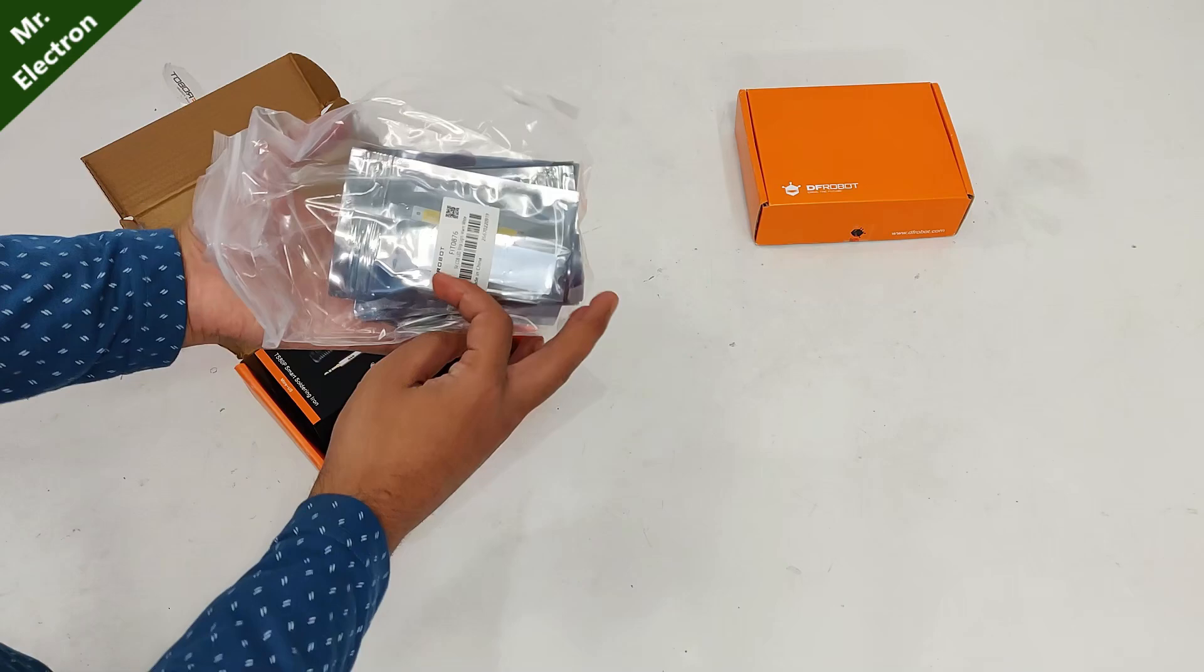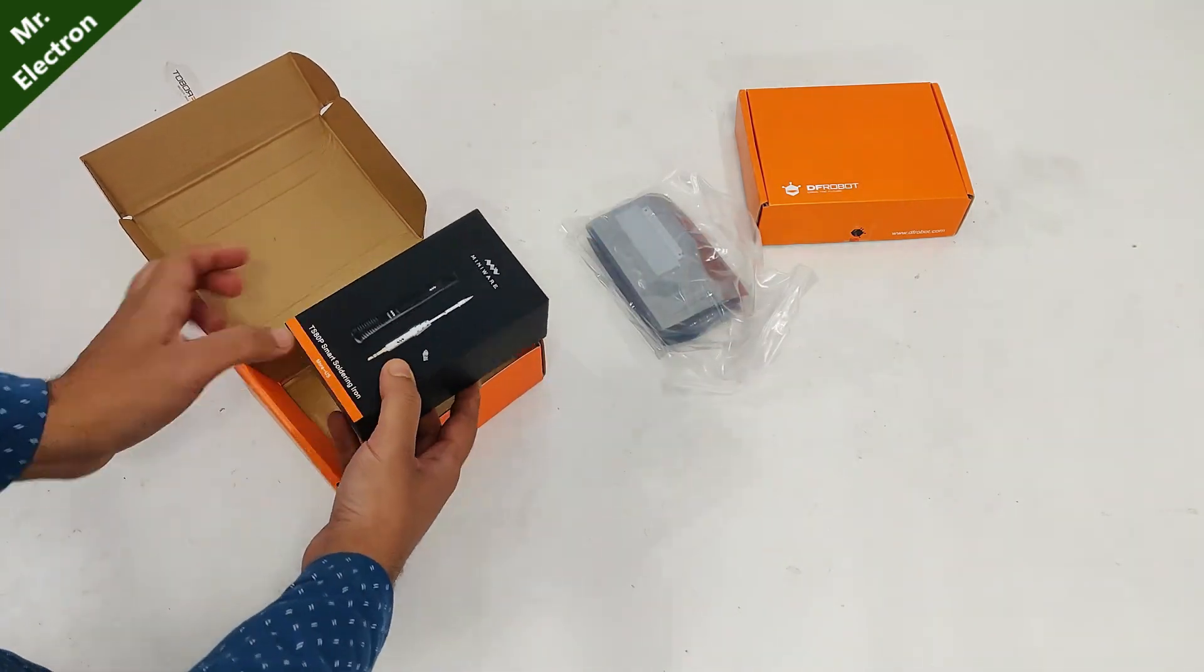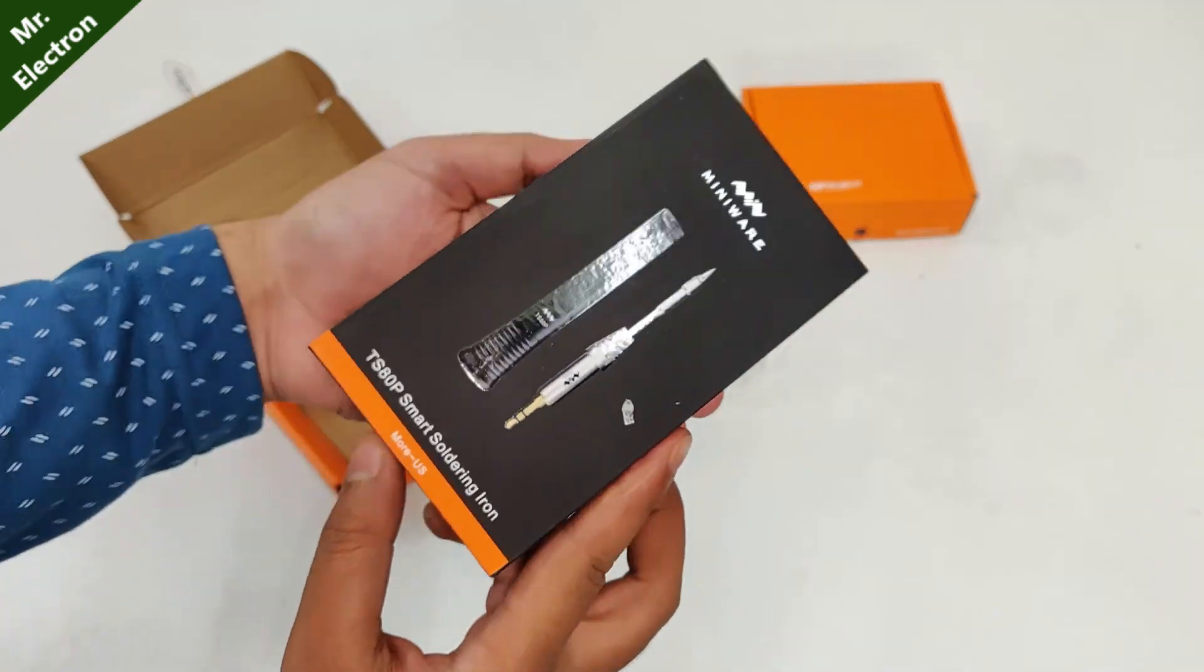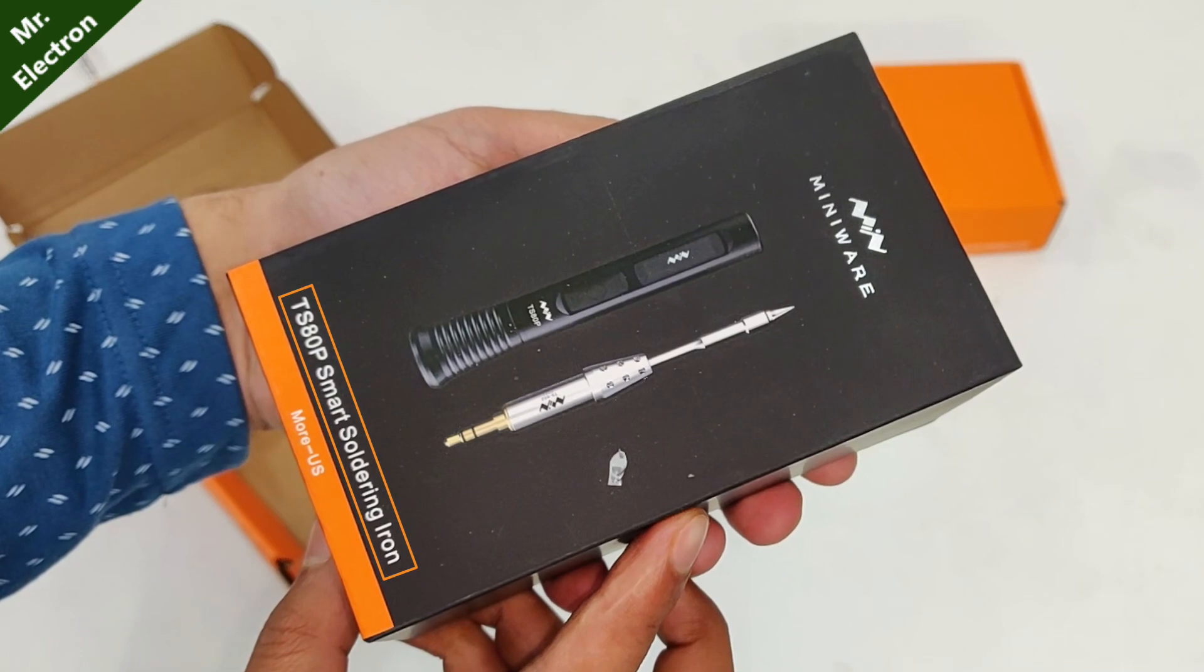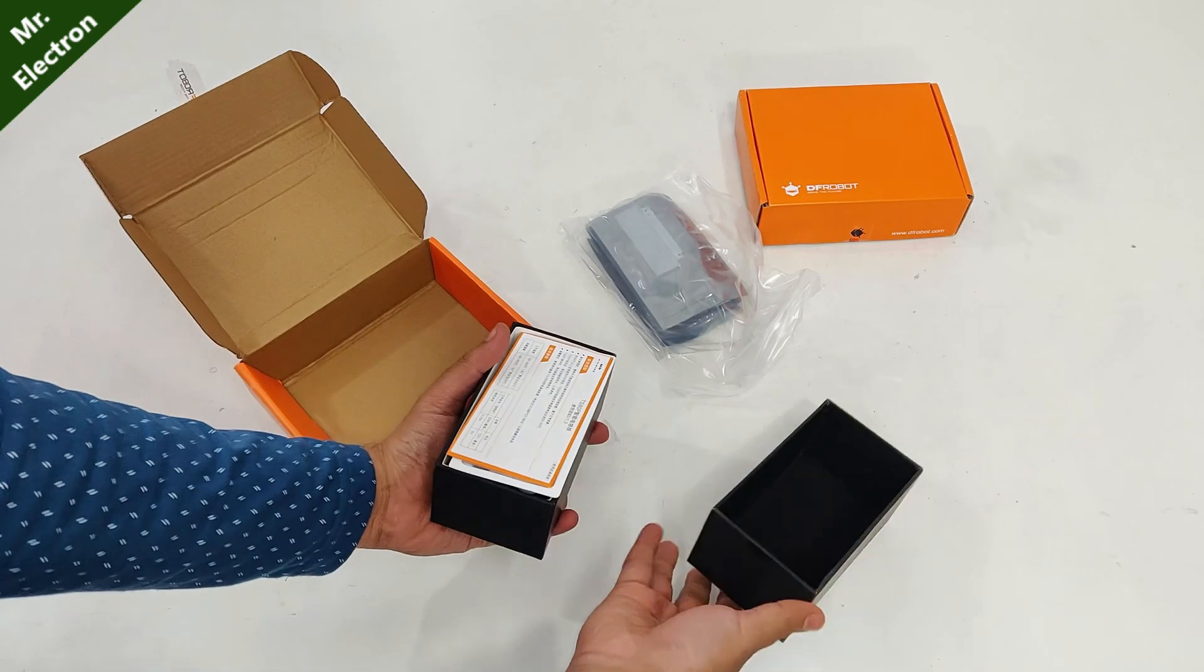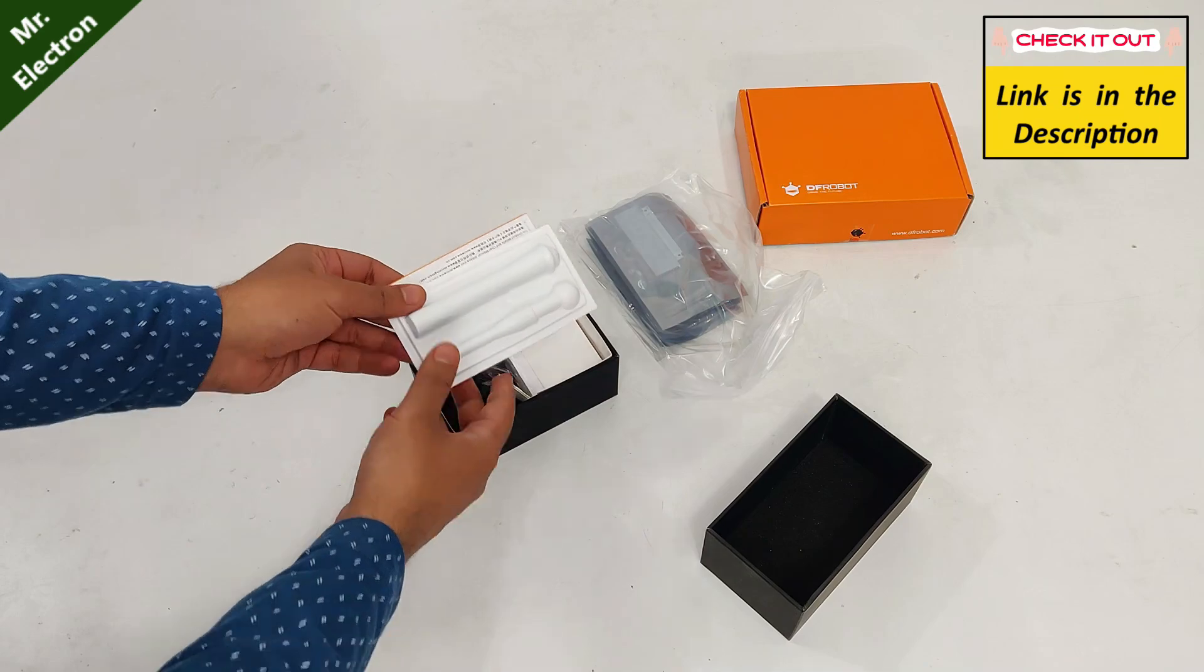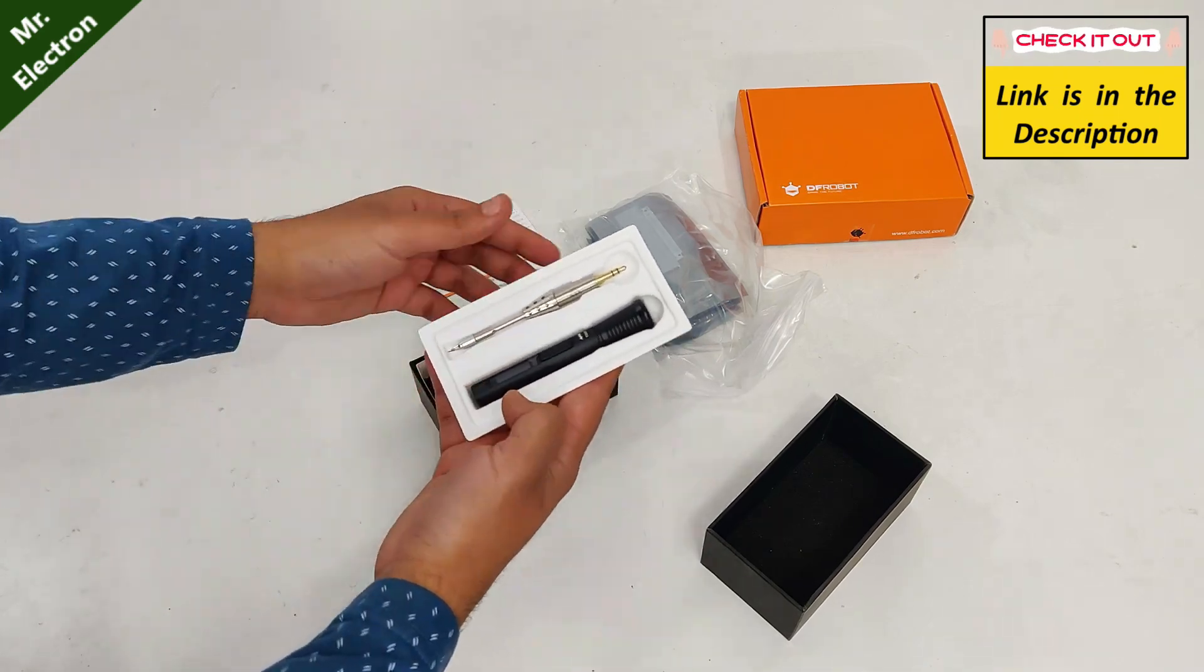Here as you can see I've got this new product from DF Robot, and it's a TS ATP soldering iron 1330 watts. Link for this product has been provided in the description below, you can check it out.